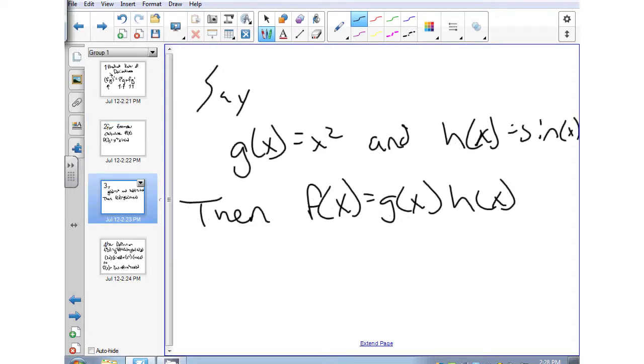What we have to do first is assign different functions to the different terms in f of x. So we're going to say that g of x equals x squared and we're going to say that h of x equals sine x.